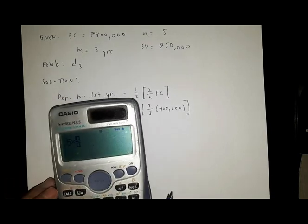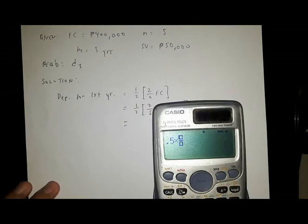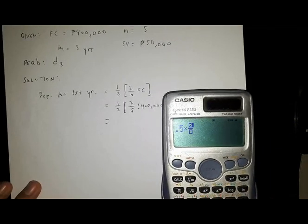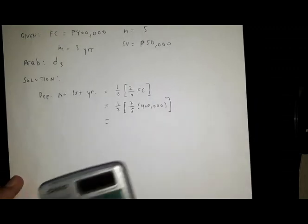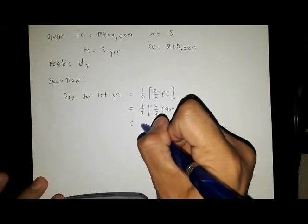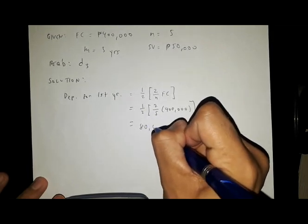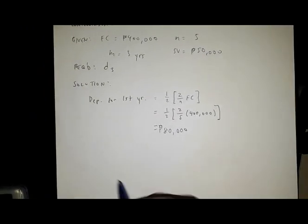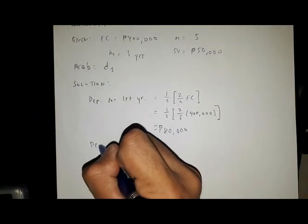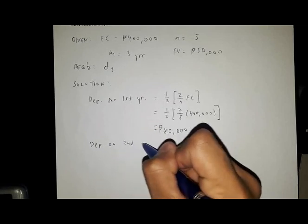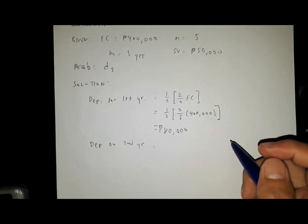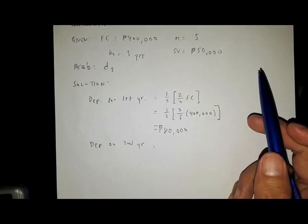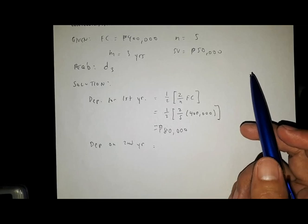Solving that gives us the depreciation for the first year, D1, equal to 80,000 pesos. Now let's solve for the depreciation on the second year.